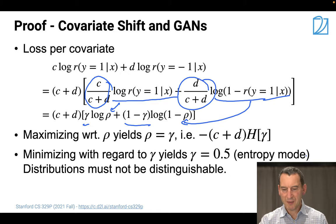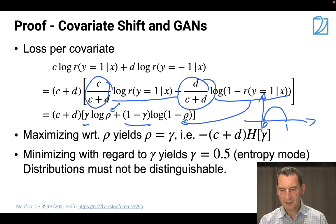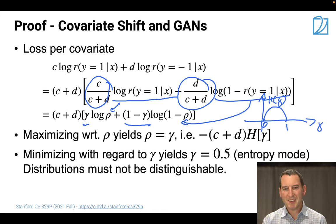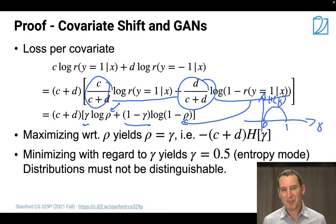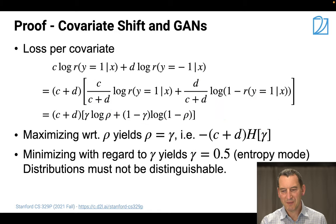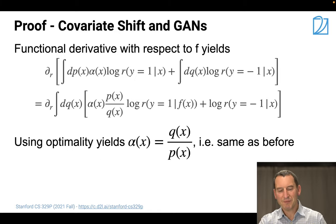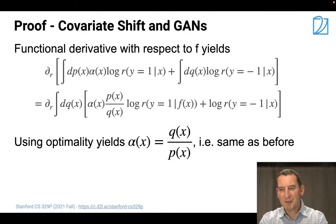Remember, that's the entropy for a binary distribution - here's zero, here's one. You can see that the entropy has its mode at one half. That gives us exactly the situation where the two distributions are no longer distinguishable, which is exactly what we wanted - because if they're not distinguishable, the adversary can do nothing more, and that means the GAN has converged.